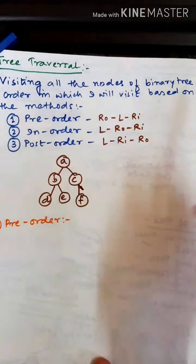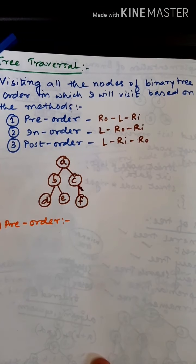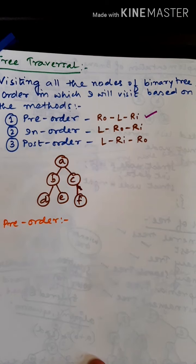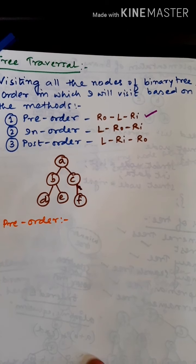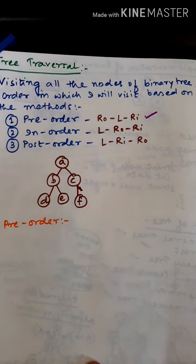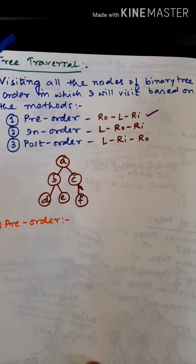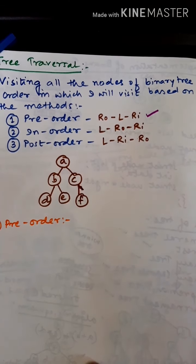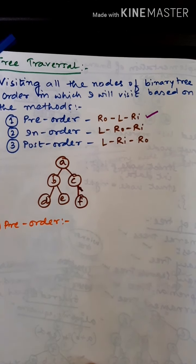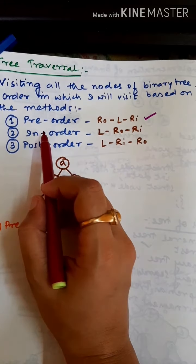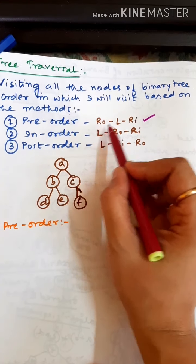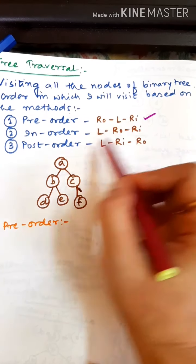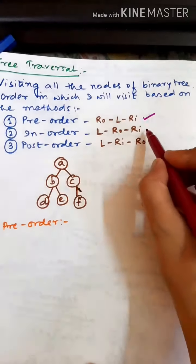The first method is pre-order. Pre-order means that while visiting all the nodes of the binary tree, we first place the root, then the left subtree, and then the right subtree. So pre-order traversal means: first the root is traversed, then the left subtree, then the right subtree. The second method is in-order traversal.